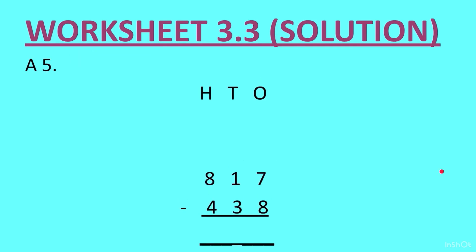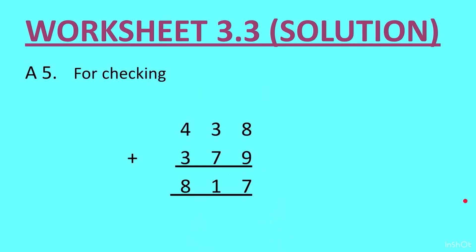Question 5: 817 minus 438. When you subtract you get the answer 379. We also had to check the answer. Let us add the two numbers: 438 plus 379. When we add we should get 817. Indeed, 438 plus 379 gives us 817, so our calculation is correct.